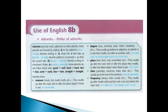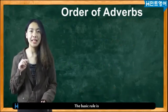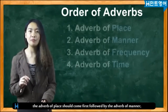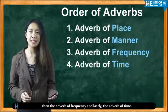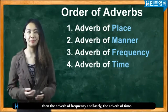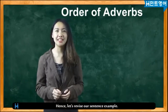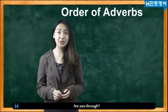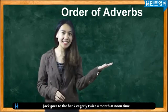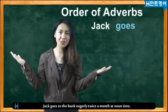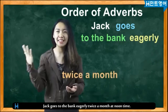And the next video is the order of adverbs. The basic rule is the adverb of place should come first, followed by the adverb of manner, then the adverb of frequency, and lastly the adverb of time. Got it? Hence, let's revise our sentence example. Read me the corrected sentence. That's right. Jack goes to the bank eagerly twice a month at noontime.